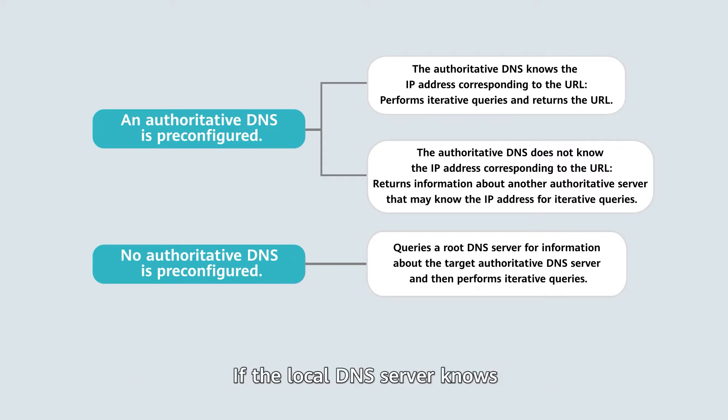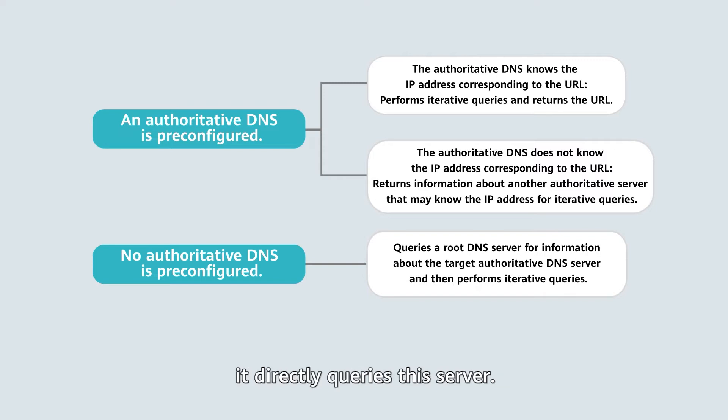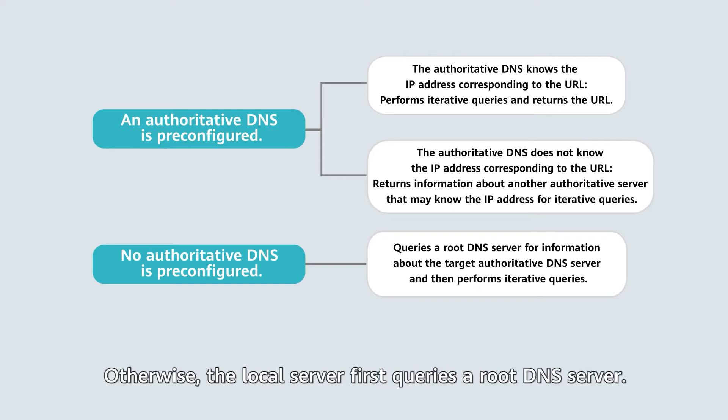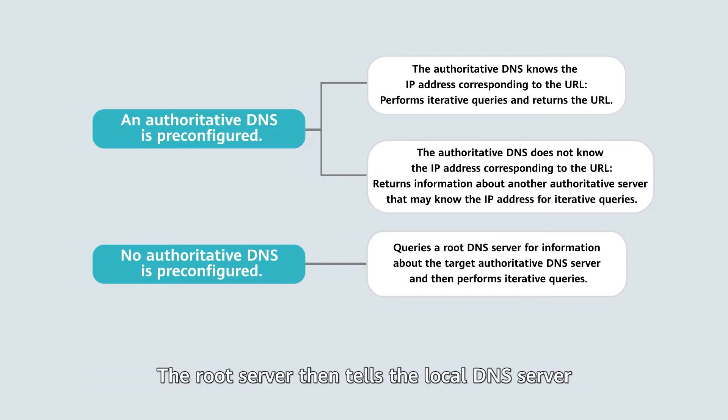If the local DNS server knows where the authoritative DNS server is, it directly queries this server. Otherwise, the local server first queries a root DNS server. The root DNS server then tells the local DNS server which authoritative DNS server it should query.